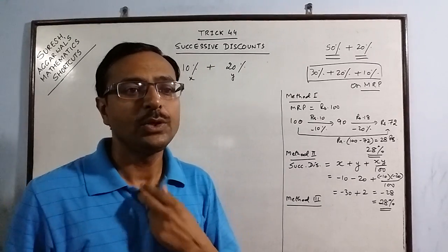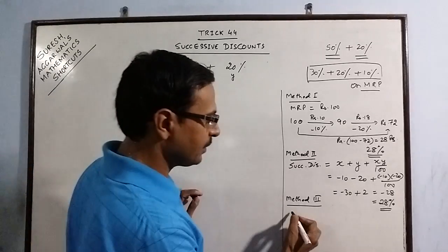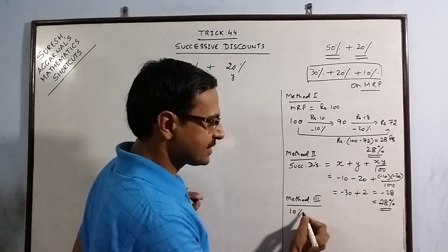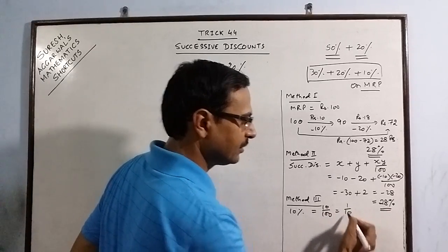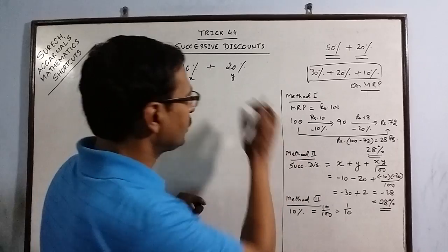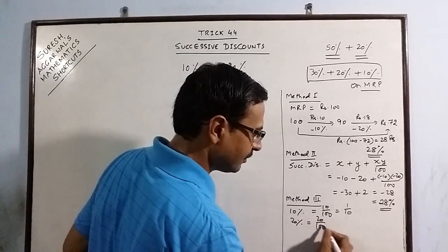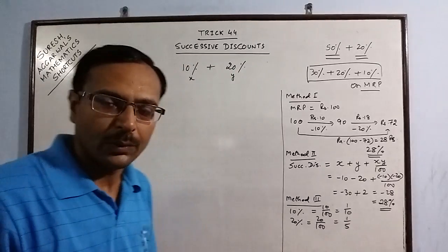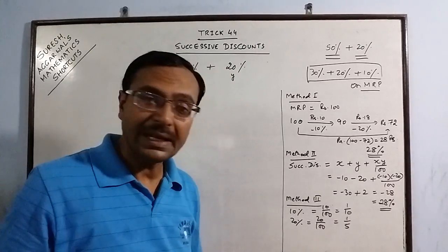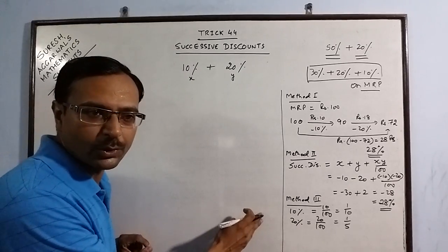Suppose you are given 10% discount. So 10% means 10 upon 100 which is 1 by 10. And 20% means 20 upon 100 which is 1 by 5. Now the trick is to calculate this using a matrix.